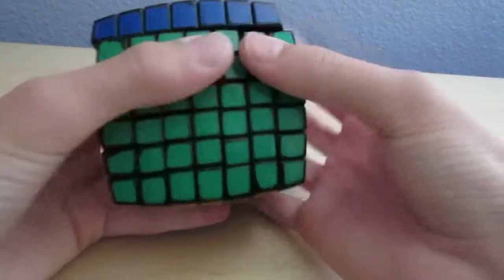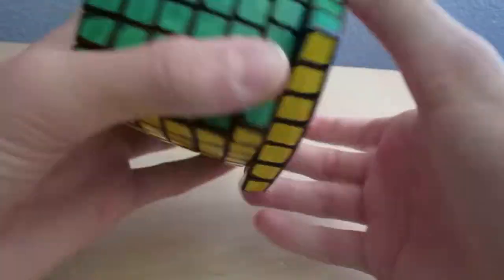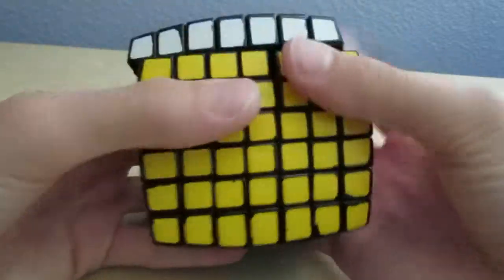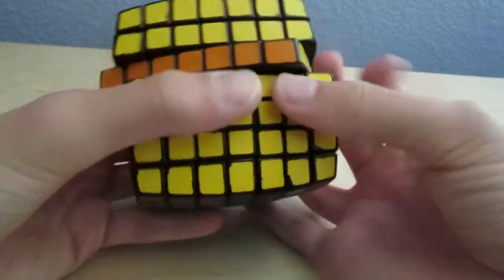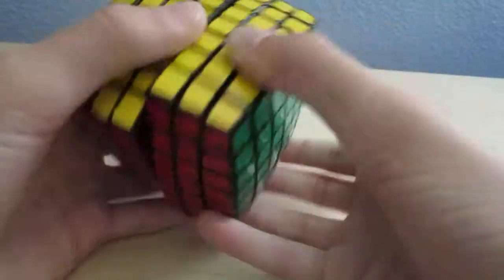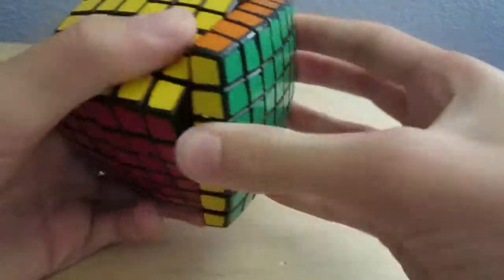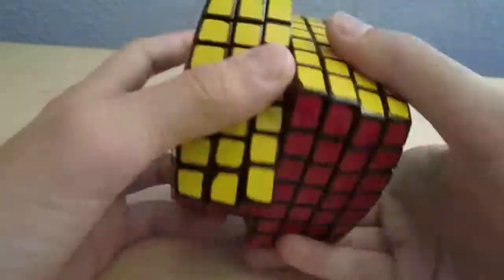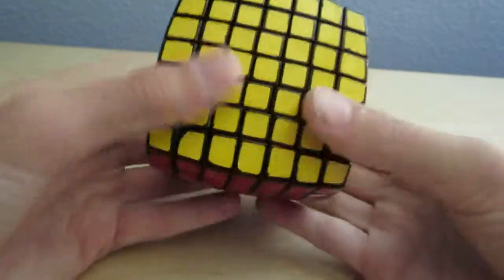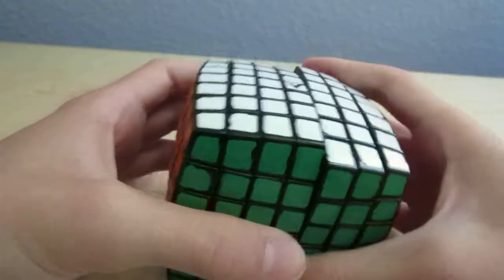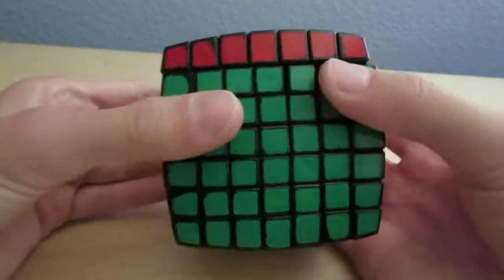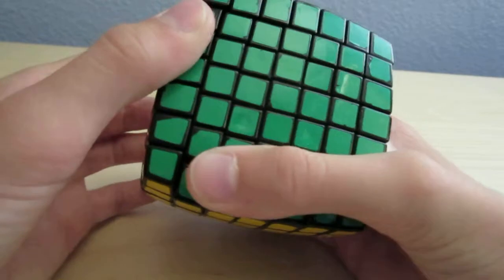7x7 I use YJ7. This one is extremely, extremely smooth. Like it just turns so effortless. Before it would go like that, but now it's that. It doesn't take that much effort to turn it. It still could be a little bit faster though. It does not have an adjustable core though.